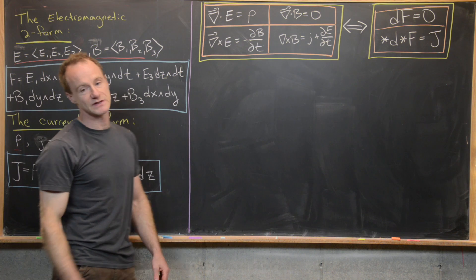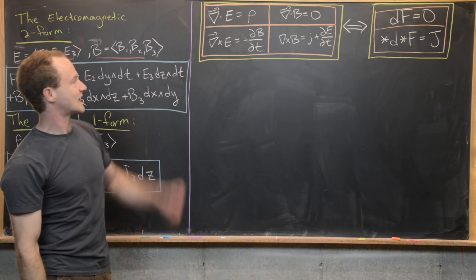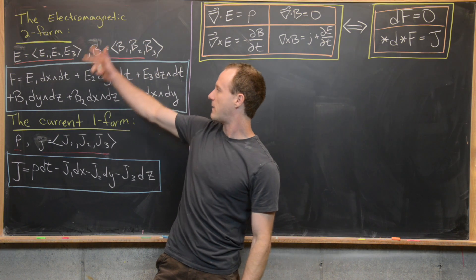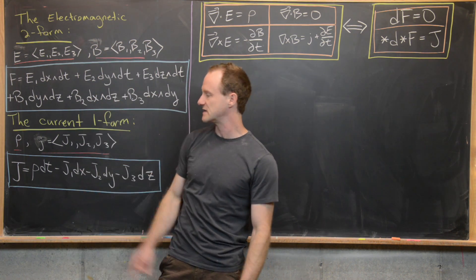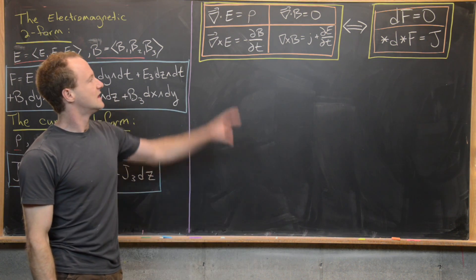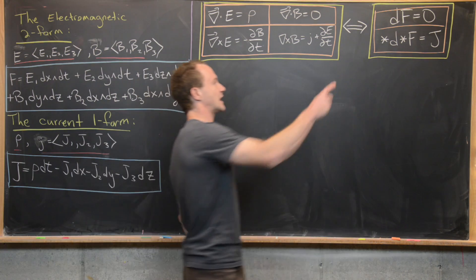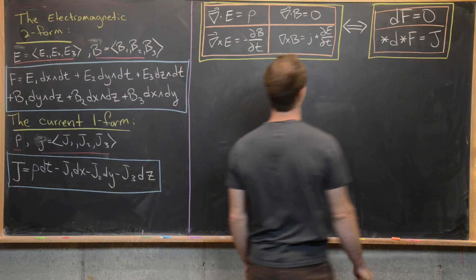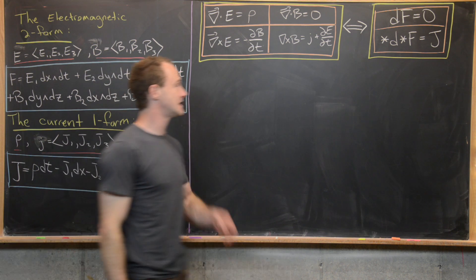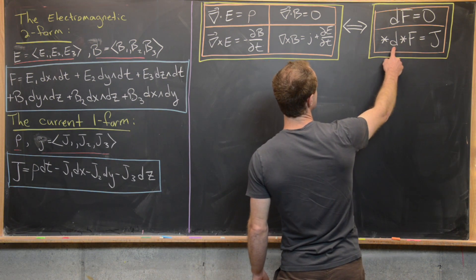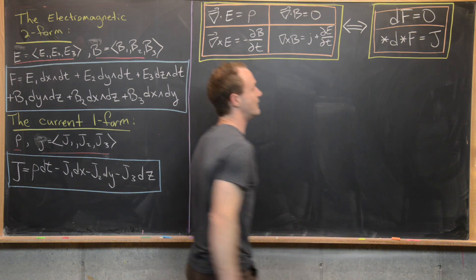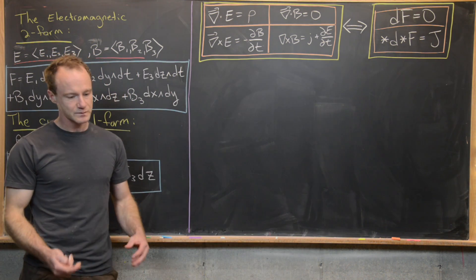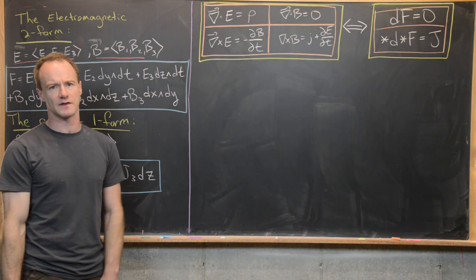Now we're ready to look at Maxwell's equations with differential forms. Here are Maxwell's equations in vector calculus. If we build the two-form F and the one-form J from the pieces inside Maxwell's equations, then those four equations are equivalent to two equations: the exterior derivative dF = 0, and the Hodge operator applied to the exterior derivative of the Hodge operator of F equals J, the current one-form. This Hodge operator is taken with respect to the Minkowski metric.